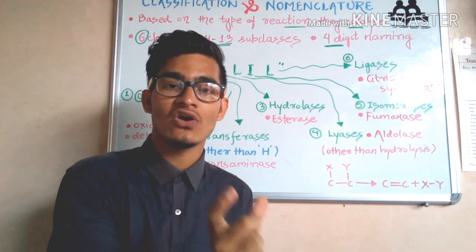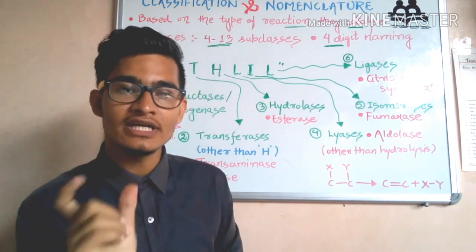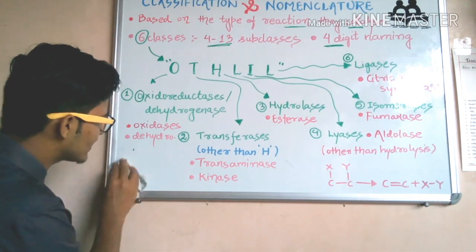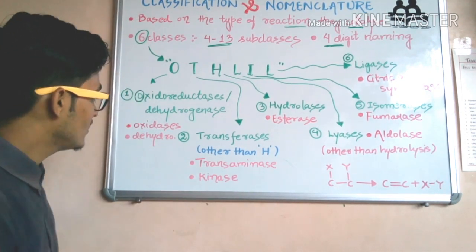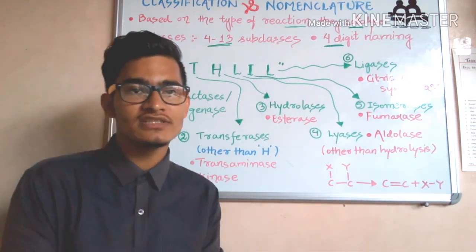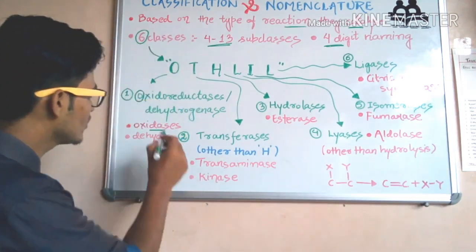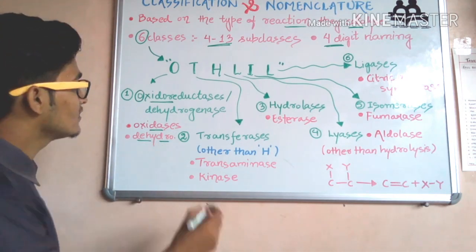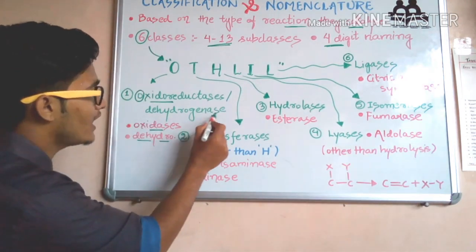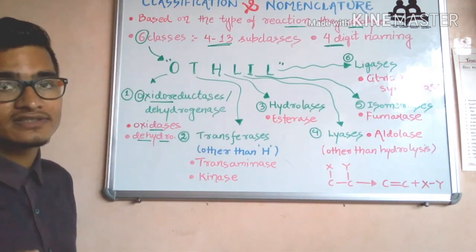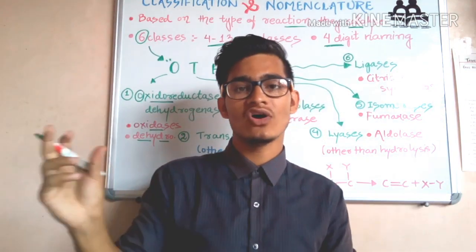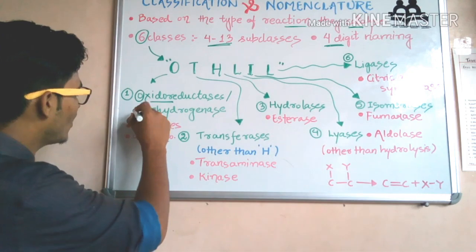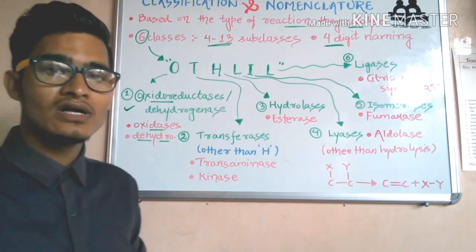Oxidoreductases are also known as dehydrogenases. The examples are: first, oxidases — the name itself indicates it catalyzes oxidation-reduction. Second, dehydrogenases — from oxidoreductase we get oxidase, from dehydrogenase we get dehydrogenase. These are two examples of oxidoreductase, which is the Class 1 enzyme.